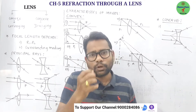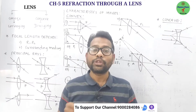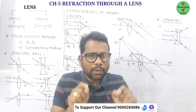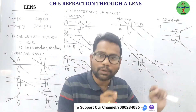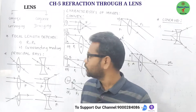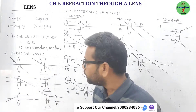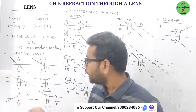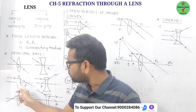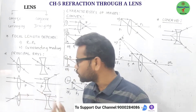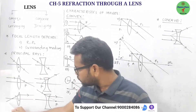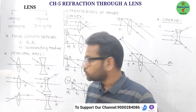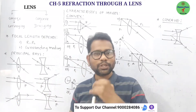To draw effective ray diagrams, we need to understand the principal rays. The minimum number required is two. For a convex lens: a ray passing through the optic center goes undeviated; a ray parallel to the principal axis passes through the focus after refraction; and a ray passing through the focus goes parallel to the principal axis after refraction.